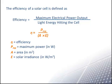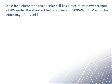Suppose an 8-inch diameter circular solar cell has a maximum power output of 4 watts under an irradiance of 1000 watts per square meter. What is the efficiency of the cell?